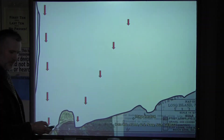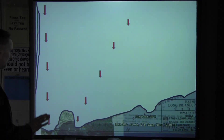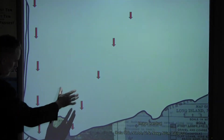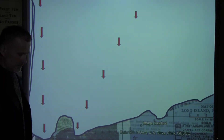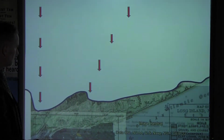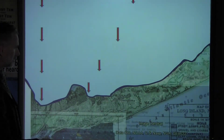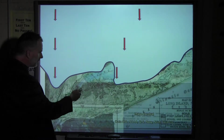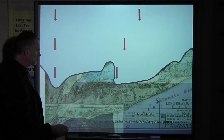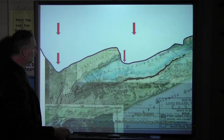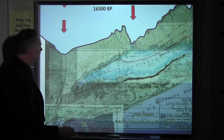Now we can look one more time at the glaciation of Long Island. This is the maximum extension of the glacier. You see Jamaica Bay here between the two lobes and the glacier terminus. We have stages of the Ronkankama Moraine and then stages of the Harbor Hill Moraine. Notice that western Long Island Sound was free of ice before the eastern part of Long Island Sound. Then the glaciation melted back north.